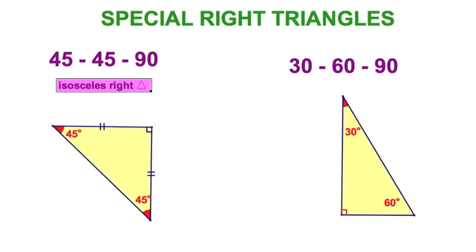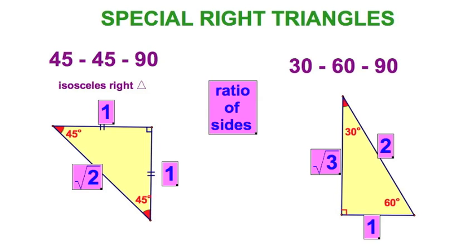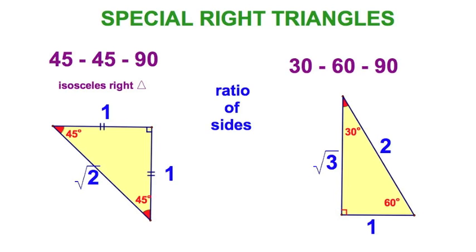This one also called the isosceles right triangle for obvious reasons. Now, the big thing is the ratio of the sides, which we will explain much more later on, but let's just throw it out there. 1-1 radical 2 for this triangle, and over here on 30-60-90, 1-2, easy as 1-2 radical 3. Be careful, radical 3 is smaller than 2, but we'll explain more of that later.